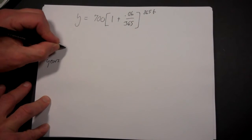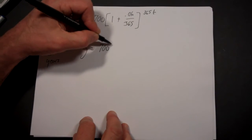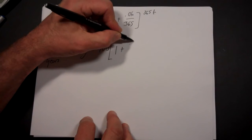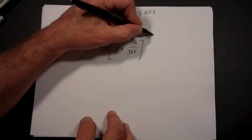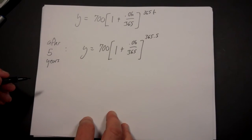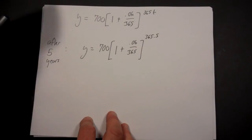So if you wanted to figure that out, you simply calculate y equals 700 times the quantity 1 plus .06 over 365, raised to the power of 365 times 5.